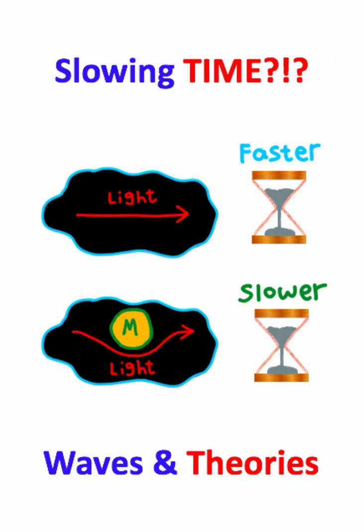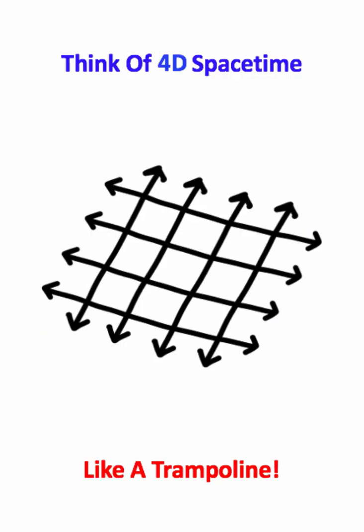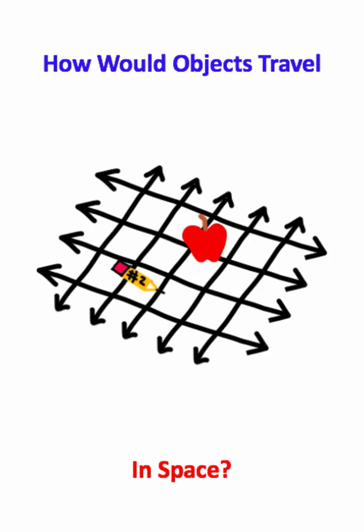I want you to imagine space and time as a giant trampoline. What do you think would happen if I took a couple of random objects and placed them in the middle of this trampoline?